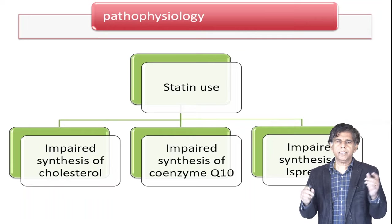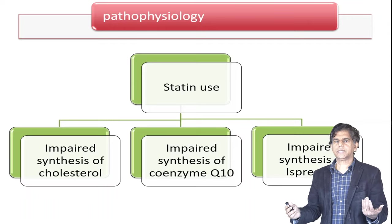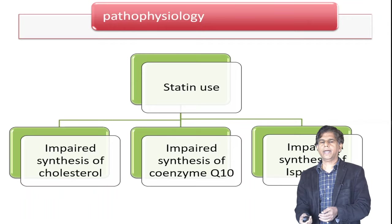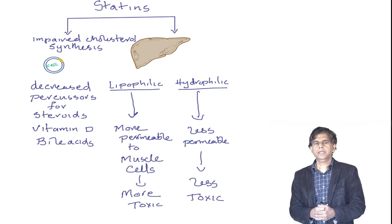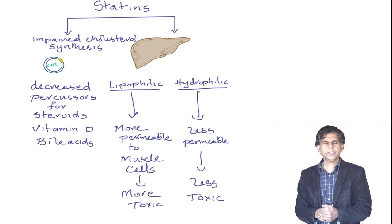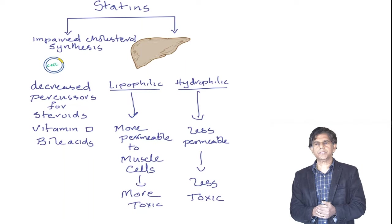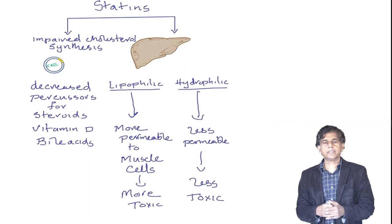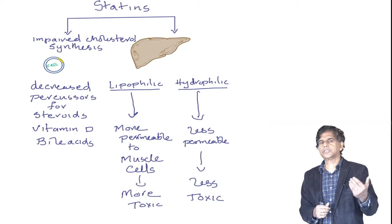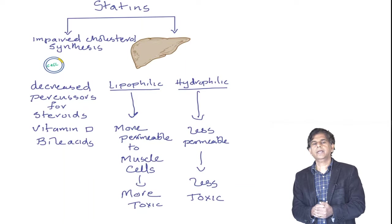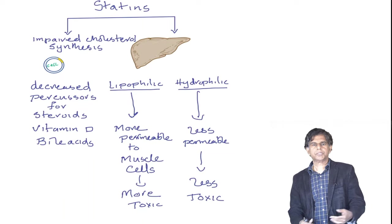There are three main pathways: impaired cholesterol synthesis, impaired coenzyme Q10, and impaired isoprenoids. Starting with impaired cholesterol — statins decrease cholesterol levels, but cholesterol is needed for membrane stability, steroid synthesis, vitamin D production, and bile acid formation. When cholesterol is decreased, membranes are affected and muscle damage can occur.